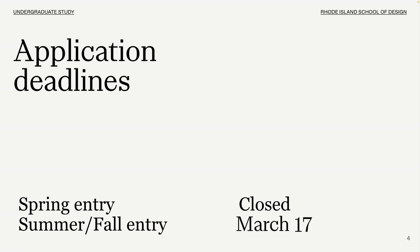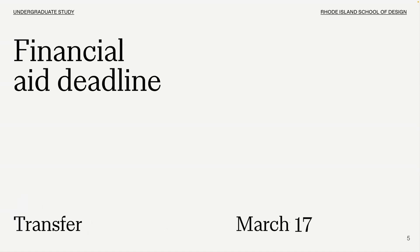Our only application deadline for transfers for 2025 is March 17 for summer/fall entry. Please know we will not be accepting transfer applications for spring entry 2025. Please take the March 17 deadline seriously — we recommend giving yourself a personal deadline of a week or two before March 17, just to make sure you have everything ready and are not submitting anything at the last minute. The transfer financial aid deadline is also March 17, so it'll be important to submit your FAFSA and RISD institutional financial aid form by this deadline.